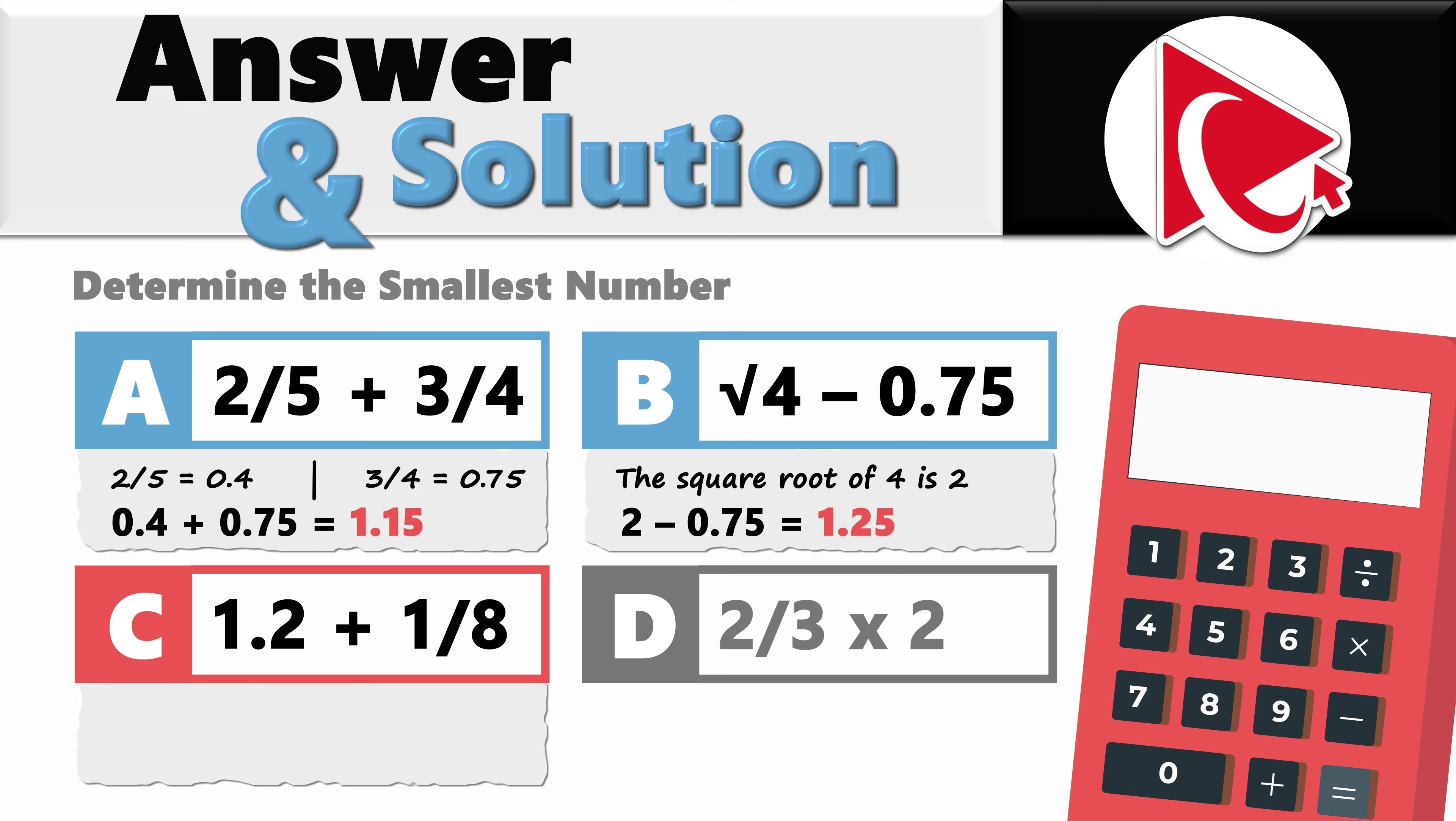Let's go to choice C: 1.2 plus 1/8. 1/8 equals 0.125. 1.2 plus 0.125 equals 1.325.